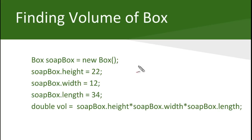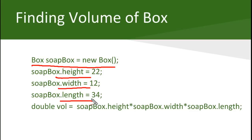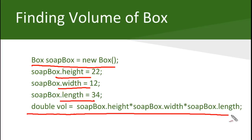Let's have a quick look at an example where we find the volume of the box. We created an object and soapbox is referring to that object. We basically specify the height, width, and length of the soapbox. Once we define the height, width, and length, we are basically multiplying those three and finding out the volume. Remember that each instance variable is accessed using the dot operator.